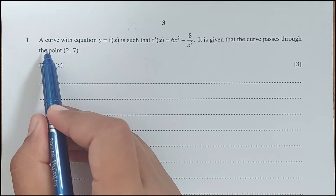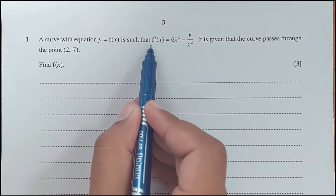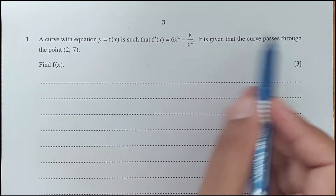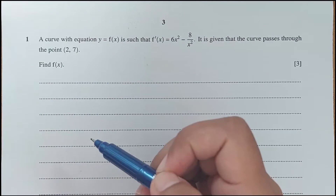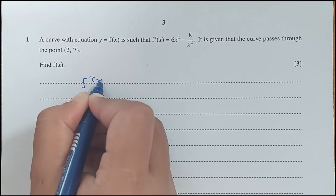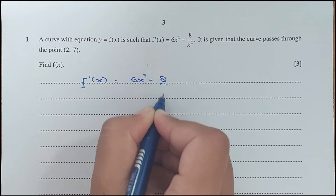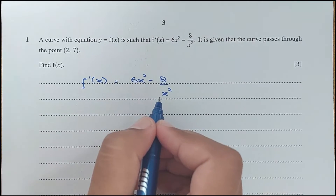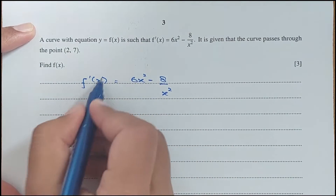Question number 1: a curve with equation y equals f(x) is such that its first derivative is given. It is given that the curve passes through the point (2, 7). Find f(x). We have f'(x) equals 6x² minus 8 over x². We have to integrate on both sides to get the curve.